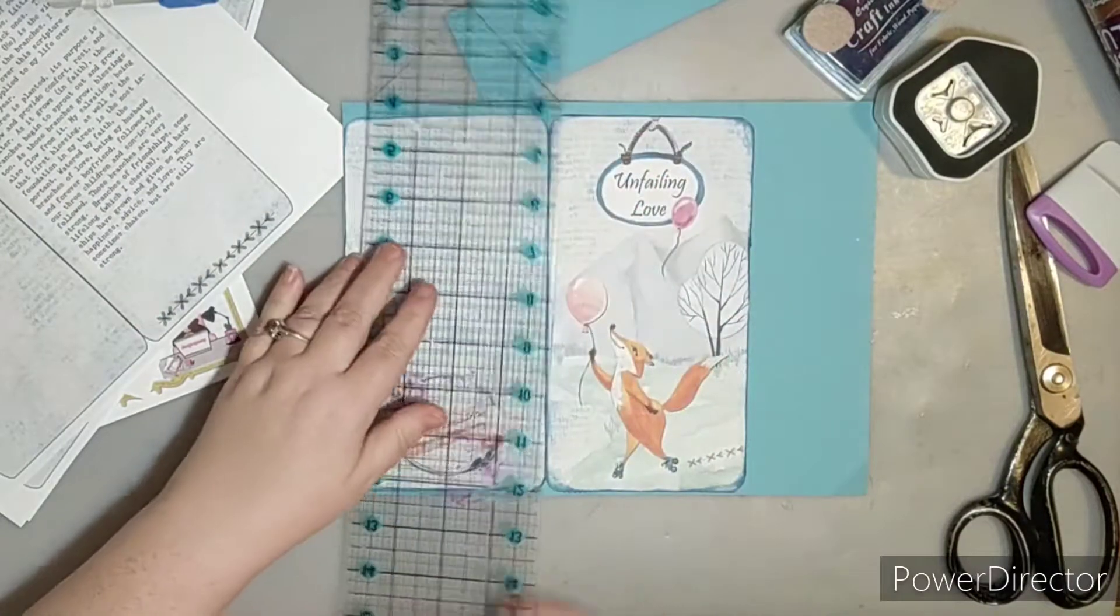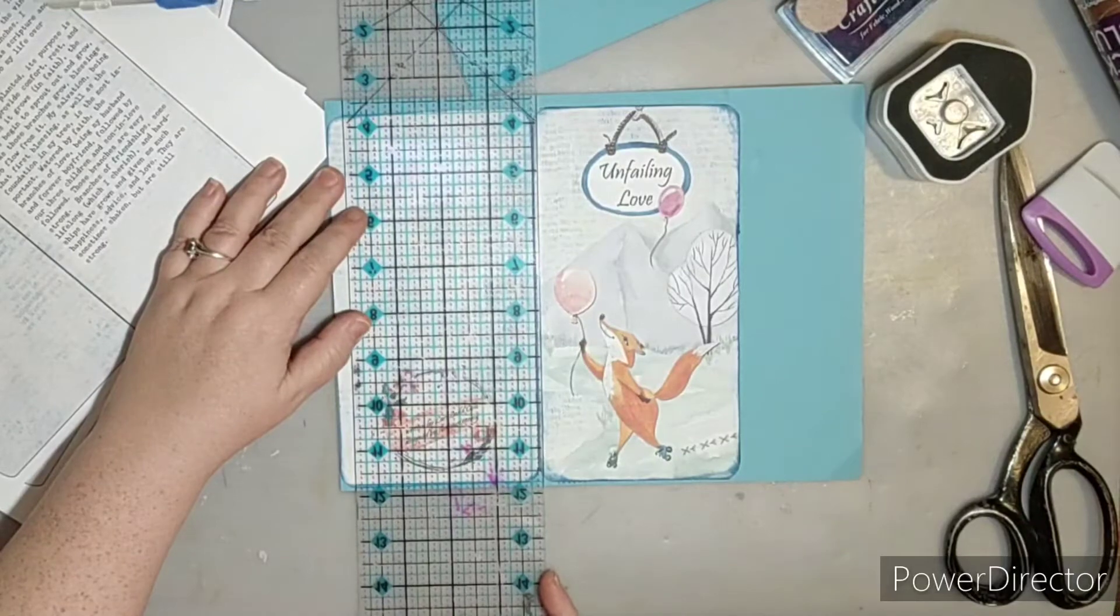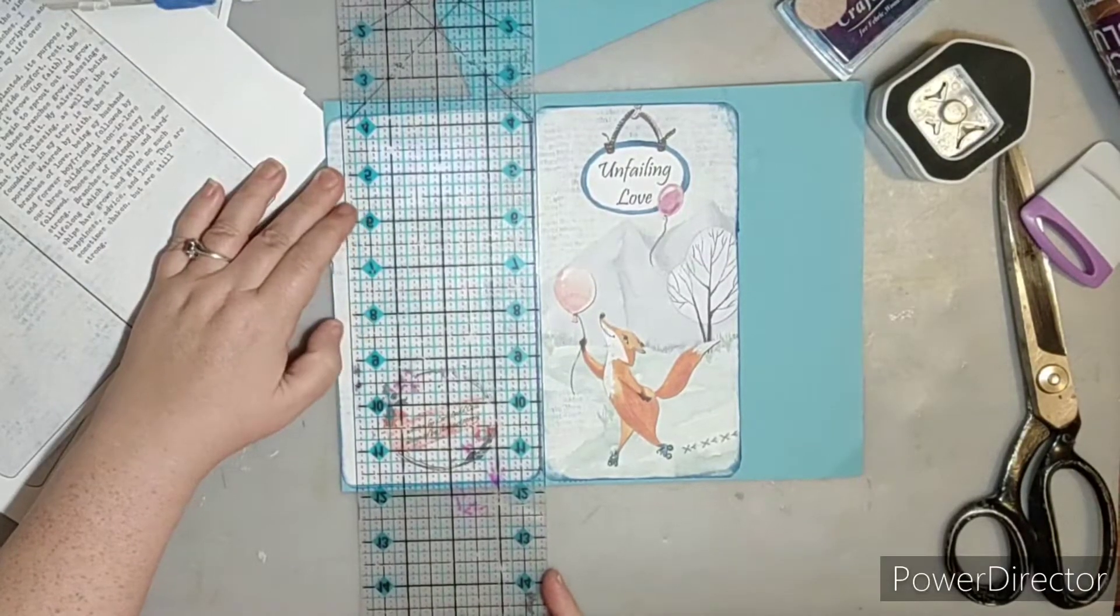I'm going to make sure that the spine has a nice crisp edge on it and I'm going to be using my ruler to do that.